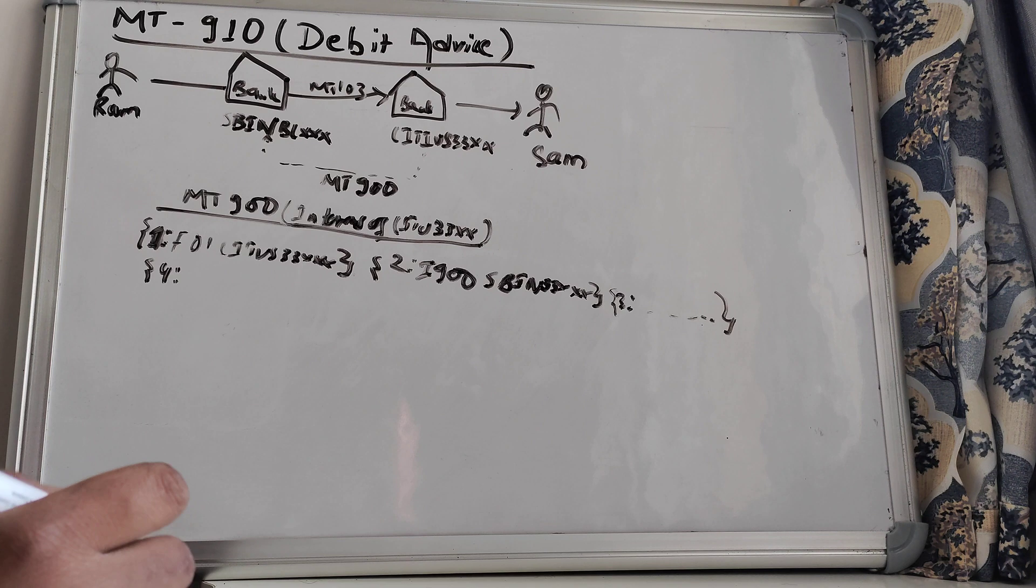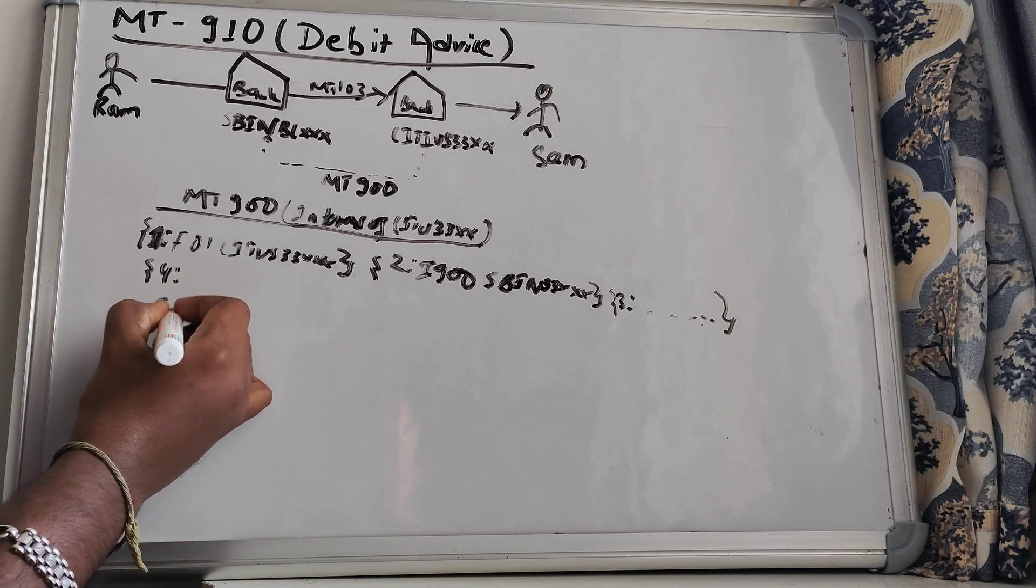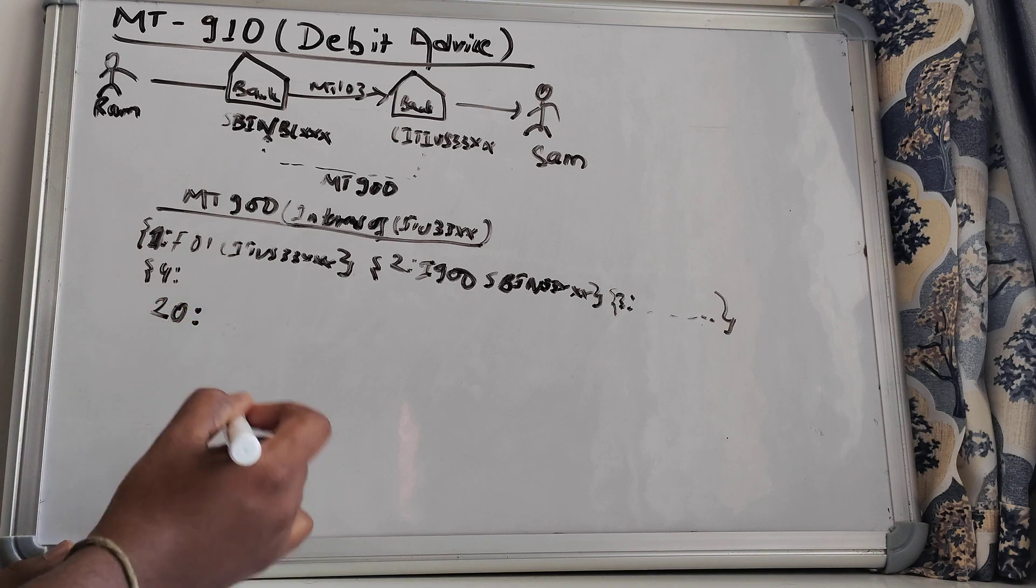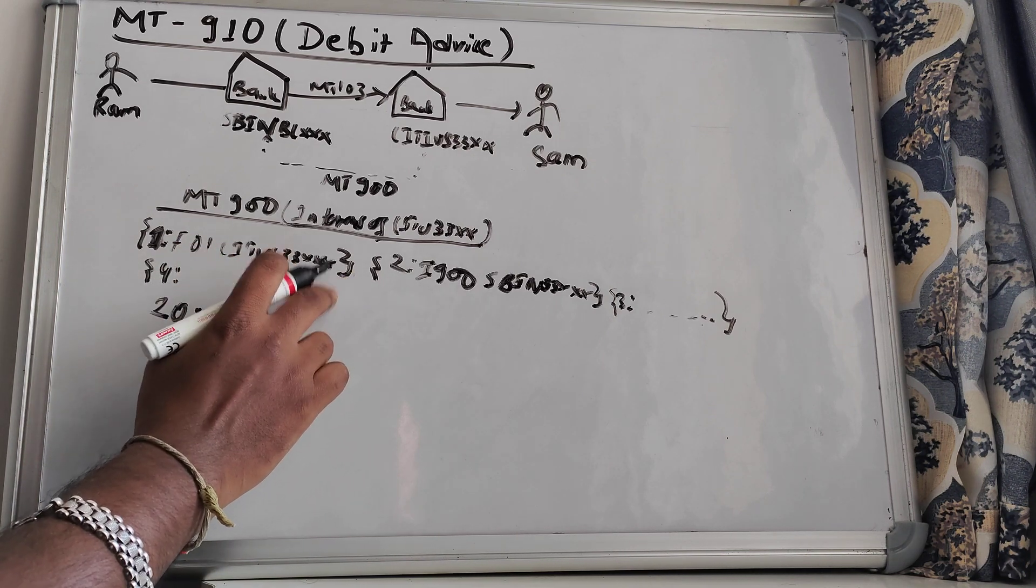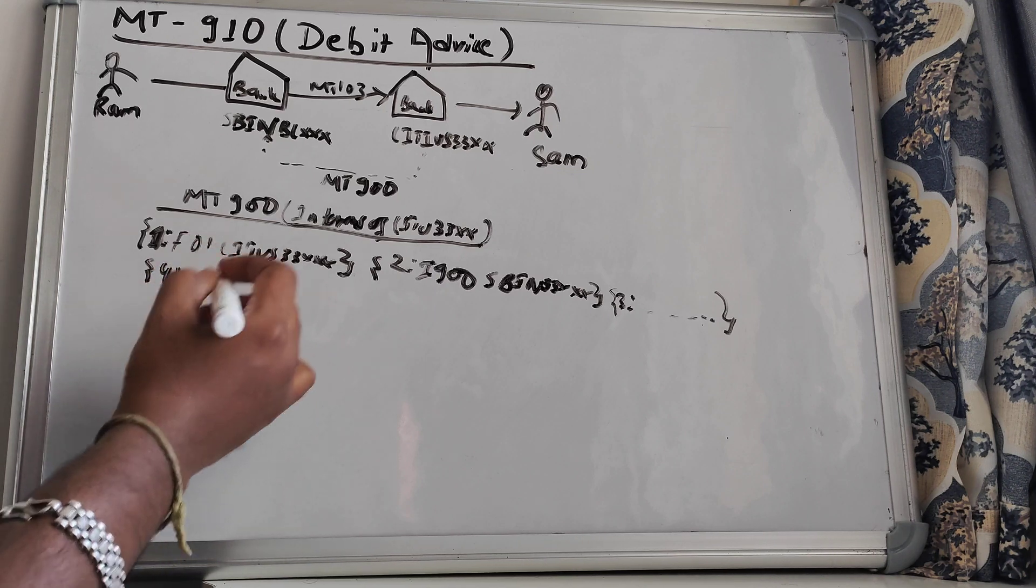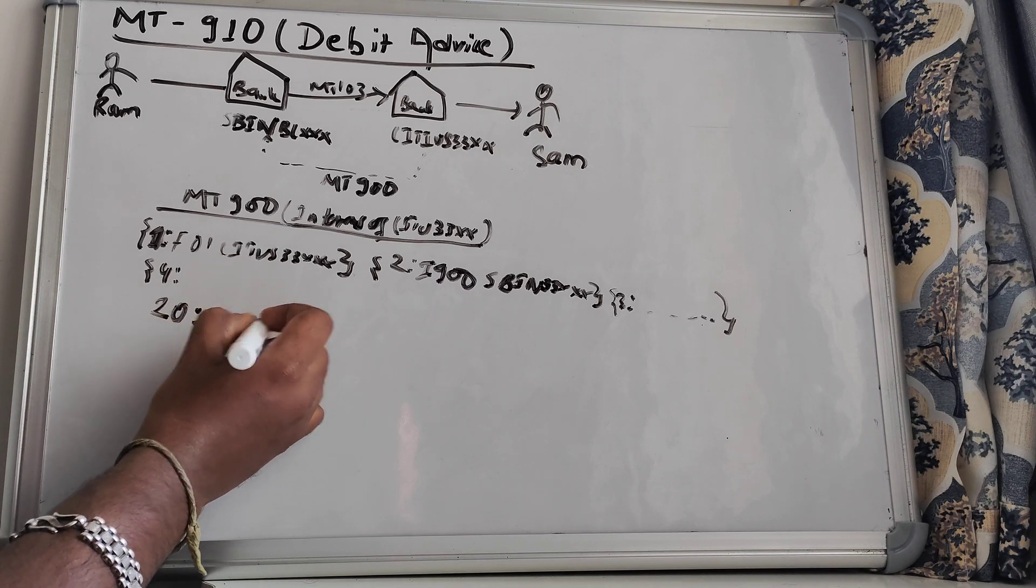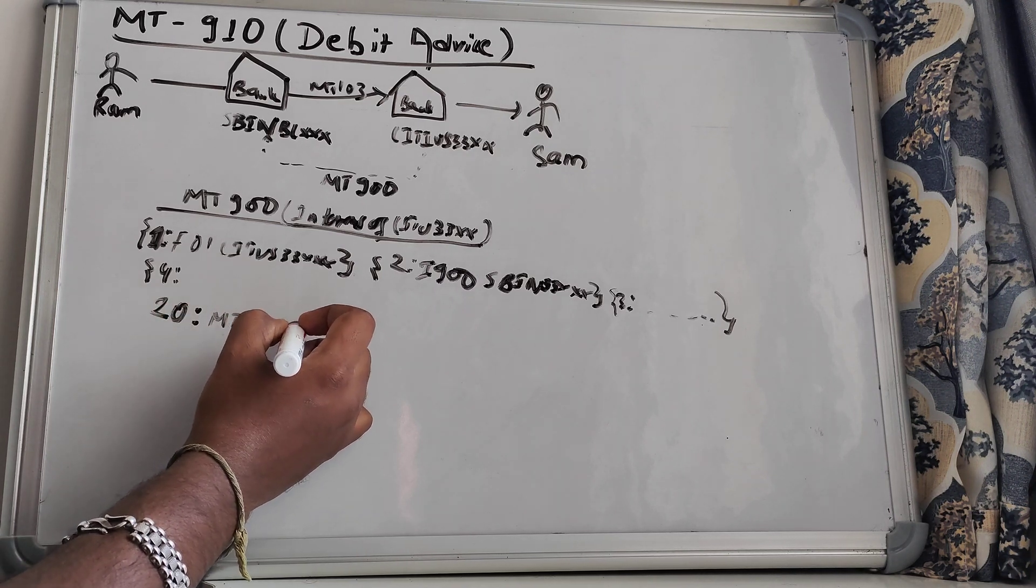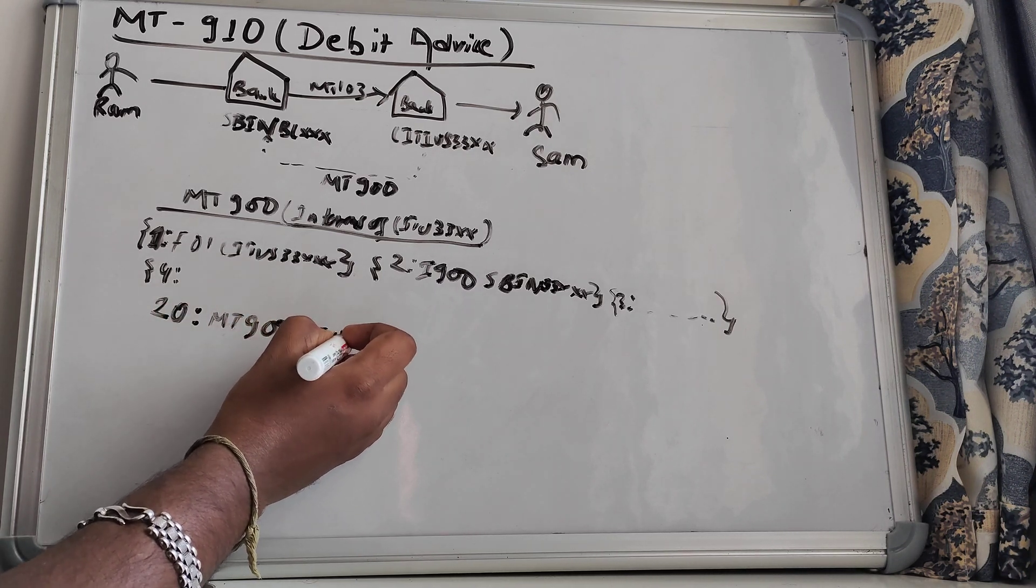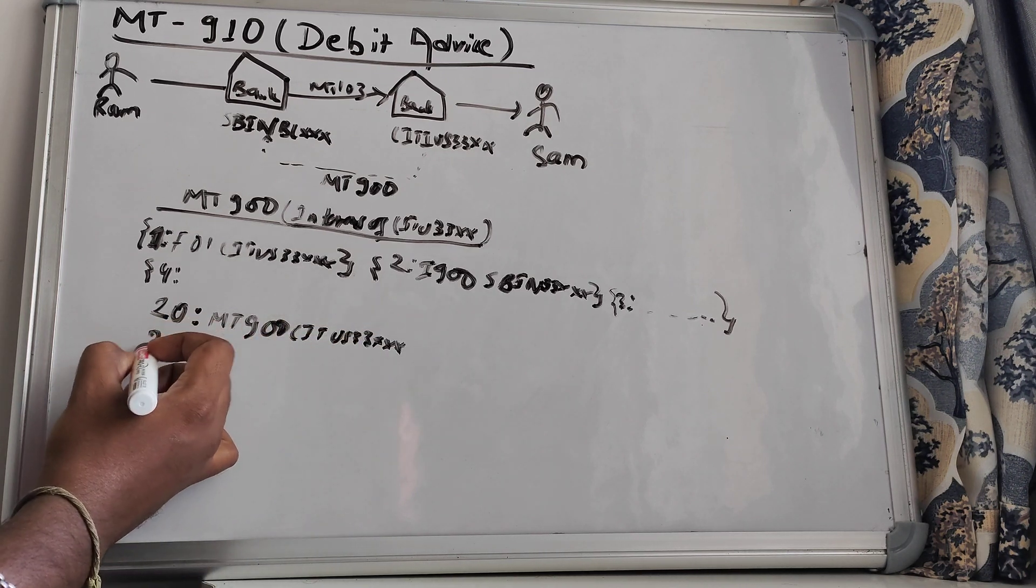So it has mandatory tags in MT-900. That is nothing but tag 20, the transaction reference number. So let's say City US has sent this MT-900 and it has some reference. For example, I'll just take MT-900 City US 33XXX.